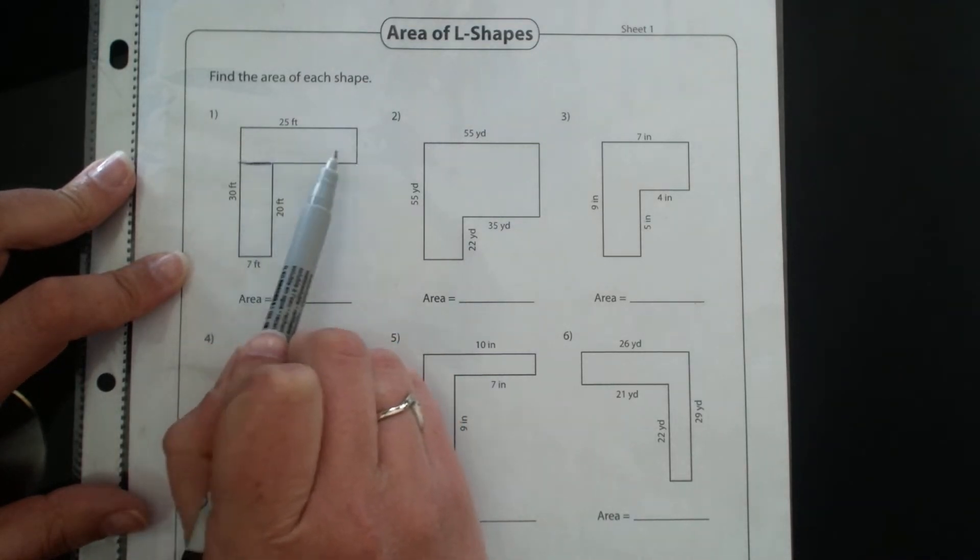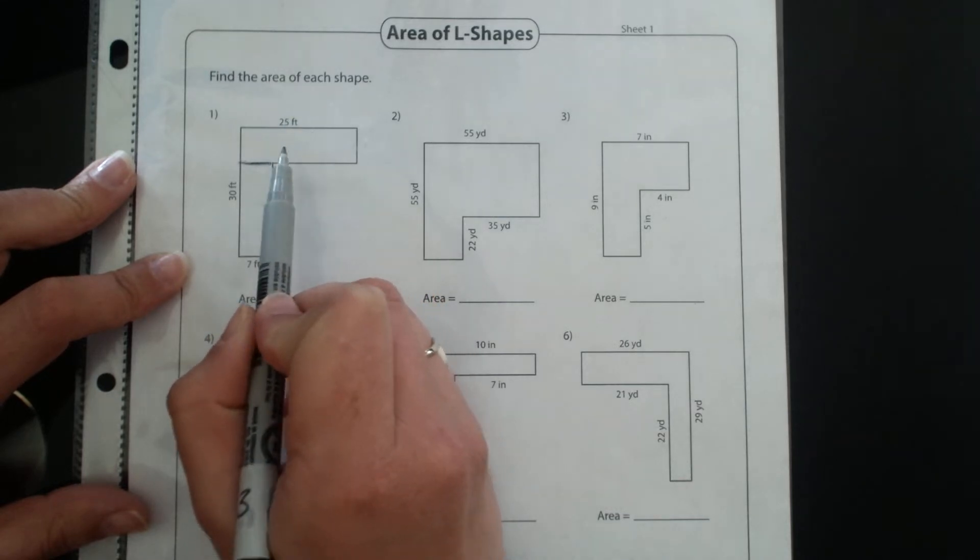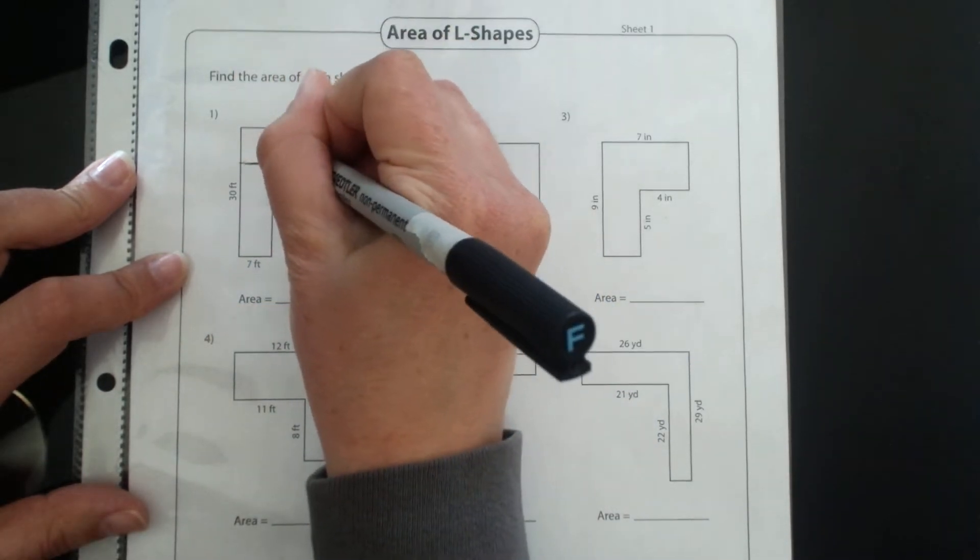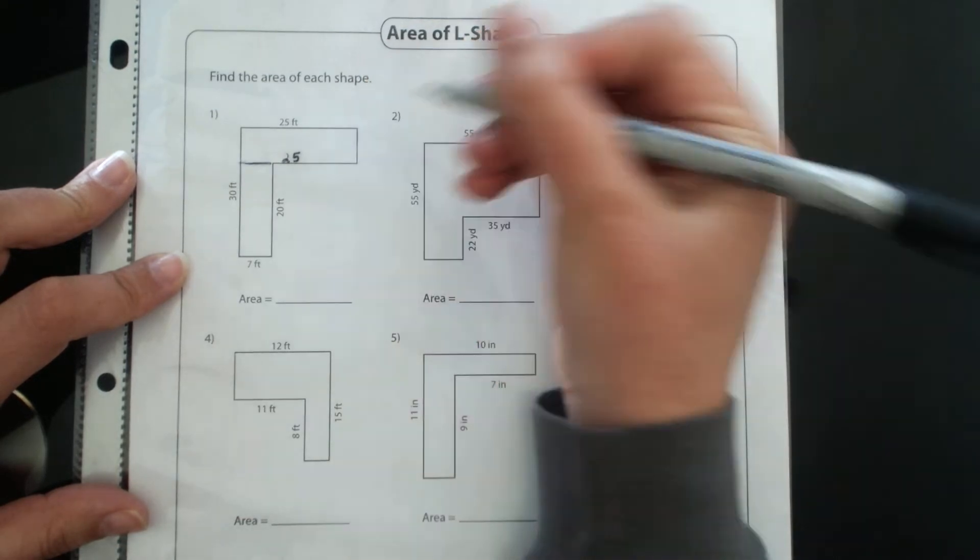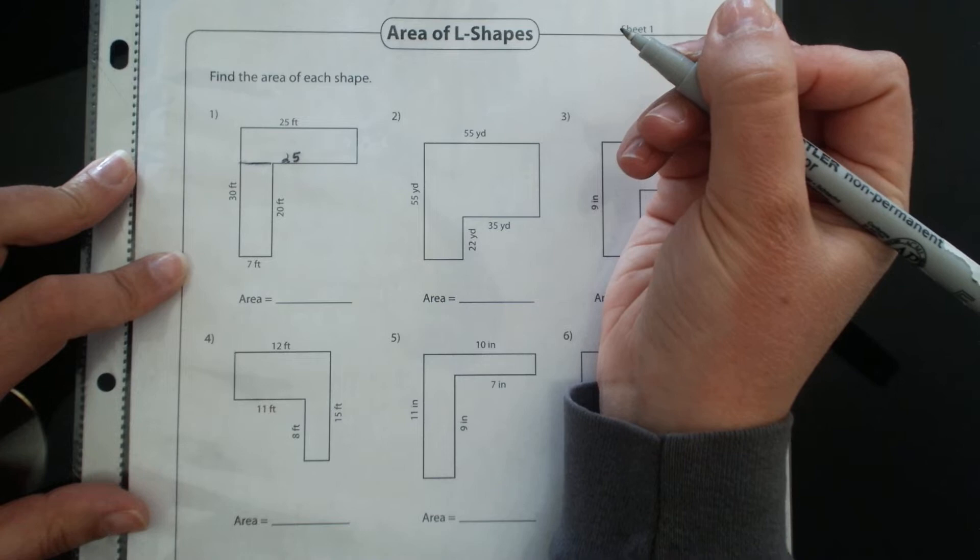I'm going to work with this rectangle at the top. I notice that I have a measurement at the top and then I can assume that that can be the one that goes along the bottom. But I am missing this side measurement here and I know that that's my width. So I have my length but I need to determine my width.